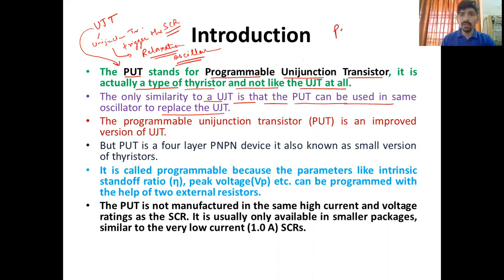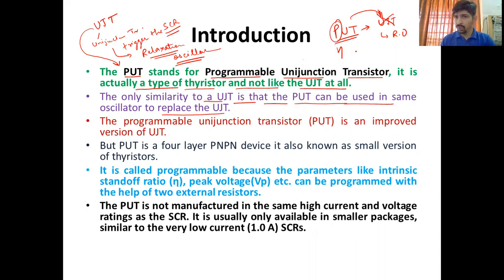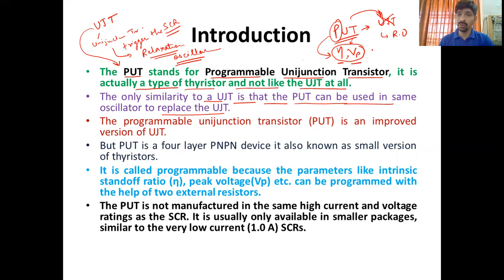इसको programmable UJT क्यों बोला गया है — because इसको जब हम UJT को relaxation oscillator की तरह काम करवाते हैं तो इसकी जगह हम PUT लगा सकते हैं। Programmable word इसलिए यूज किया गया है because इसमें intrinsic ratio और peak voltage जो UJT की होती है वो fixed होती है, इसमें हम programmed कर सकते हैं। So this is the only reason to use PUT as a UJT; otherwise it is an SCR — SCR में जैसे anode के third-end gate होते हैं, it is similar like that.